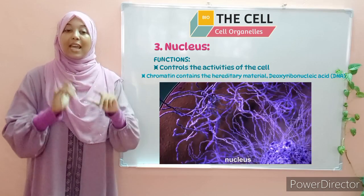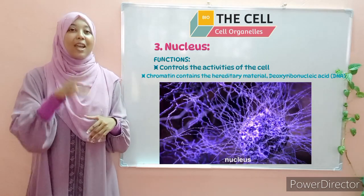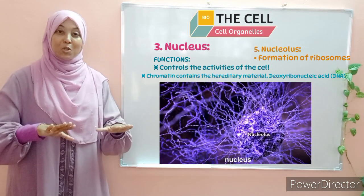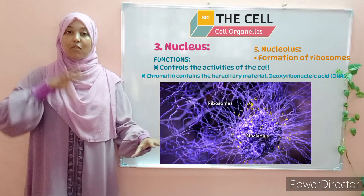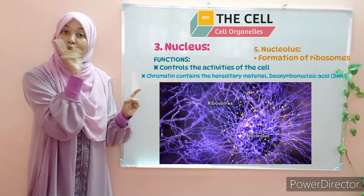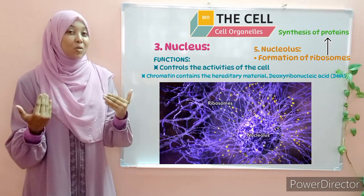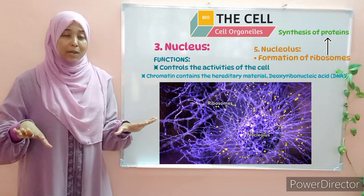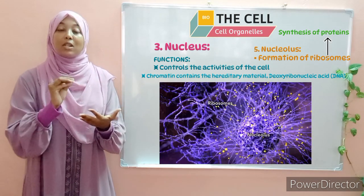Another structure present within the nucleus is the nucleolus. The nucleolus has one function: the formation of ribosomes. Ribosomes are other organelles that are present within the cell. So essentially, you are having one organelle forming another organelle — the nucleolus forming the ribosomes. The function of the ribosome is the synthesis of proteins. Ribosomes are cylindrical in shape and can be present within the cytoplasm or attached to another organelle called the endoplasmic reticulum, which we will discuss in part two of this video.